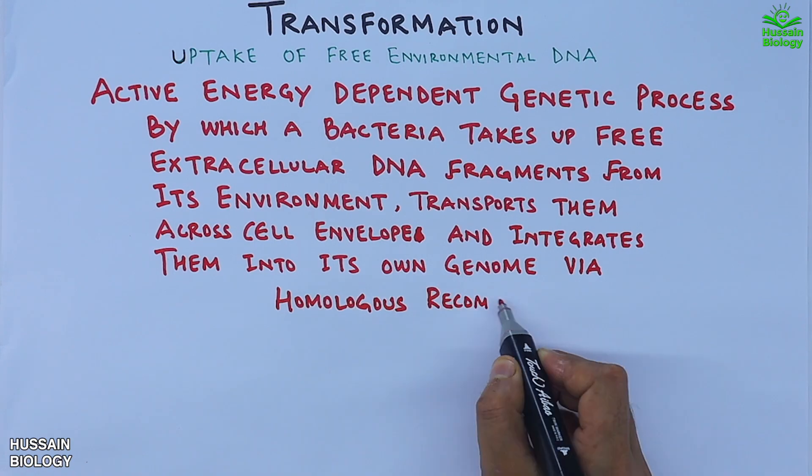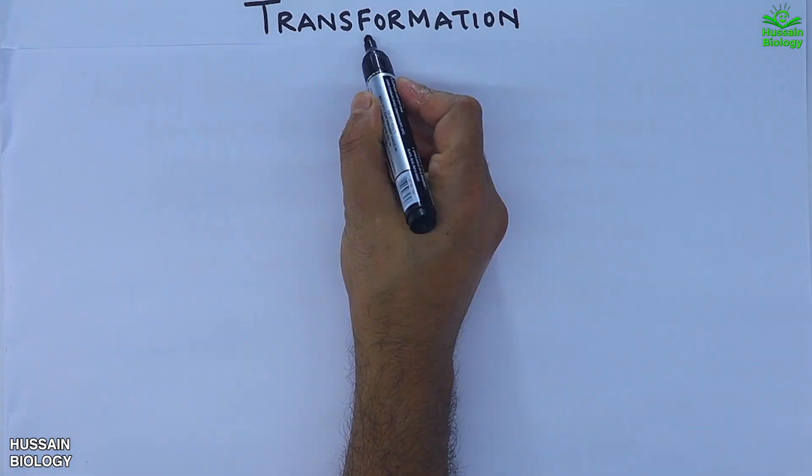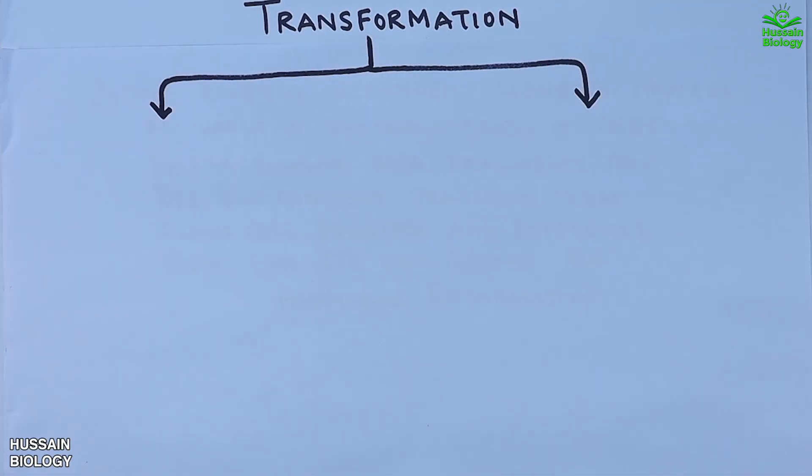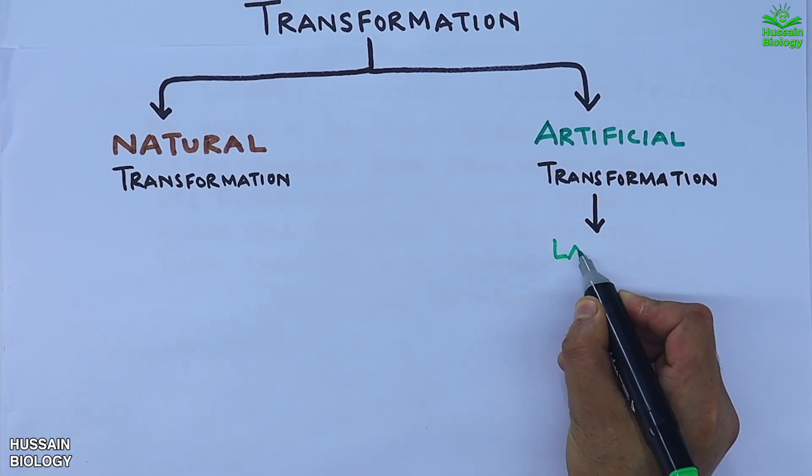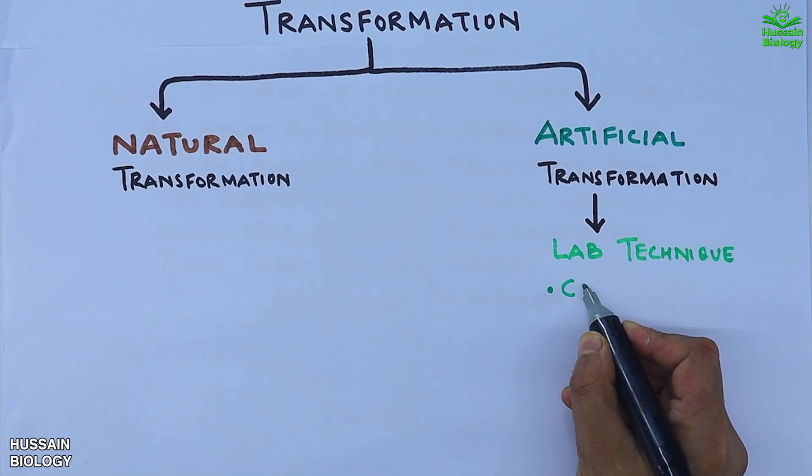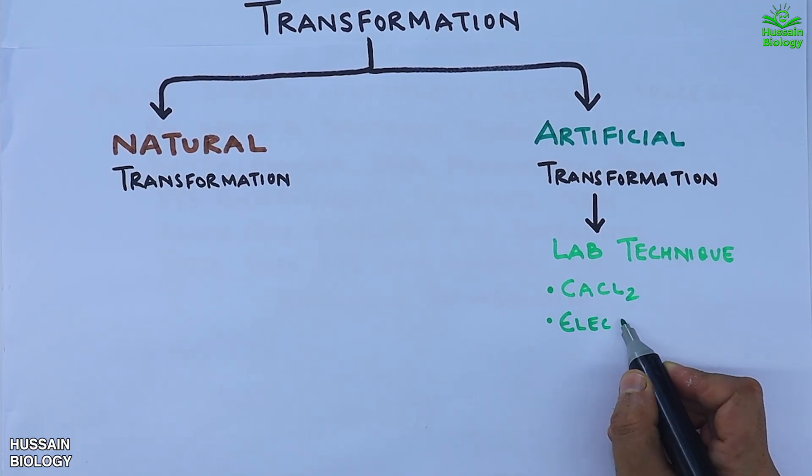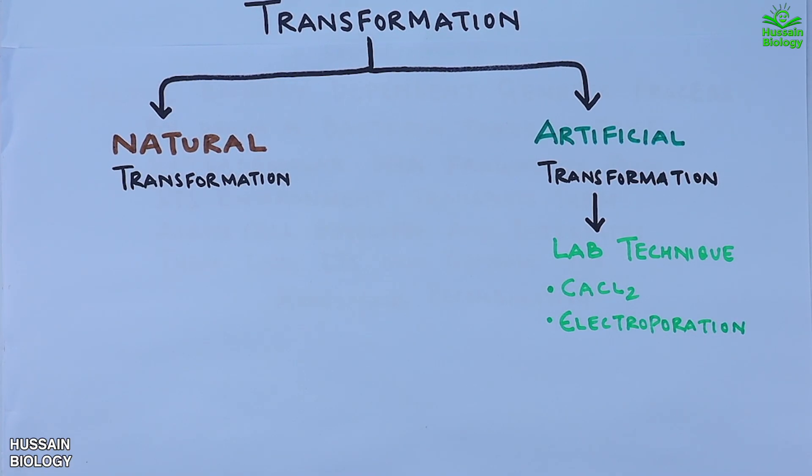Transformation is of two types: natural transformation and artificial transformation. Artificial transformation is a lab technique used to make cells take up foreign DNA by force, either by using calcium chloride treatment with heat shock to open the cell membrane, or by using electroporation where a brief electric pulse creates temporary pores in the cell membrane for DNA entry.